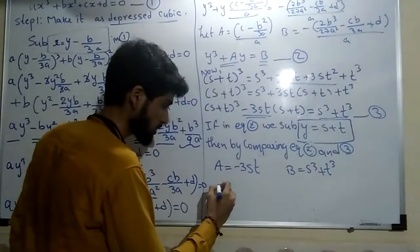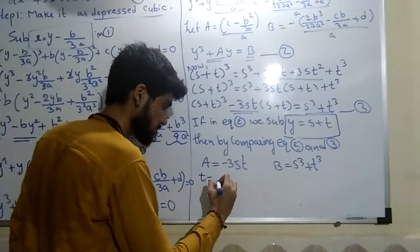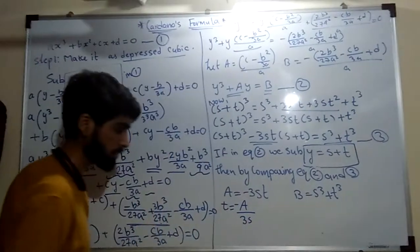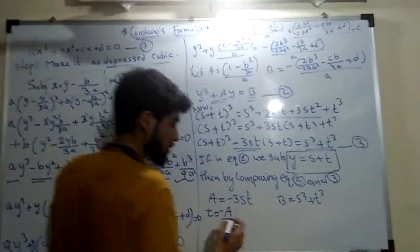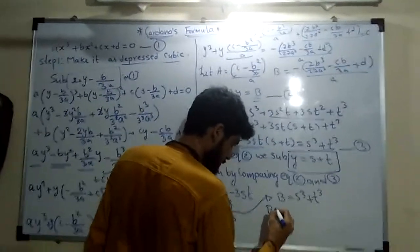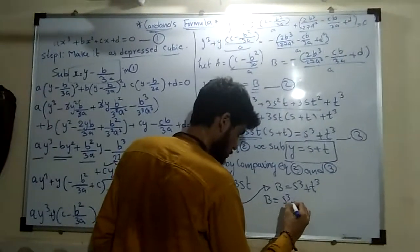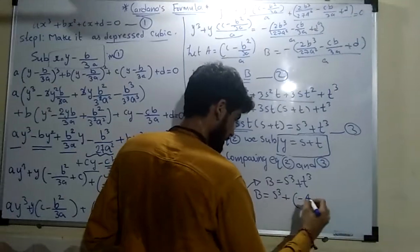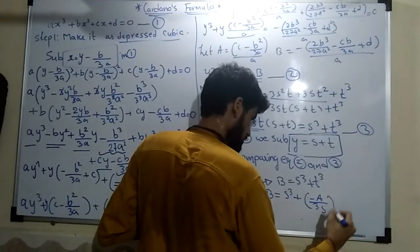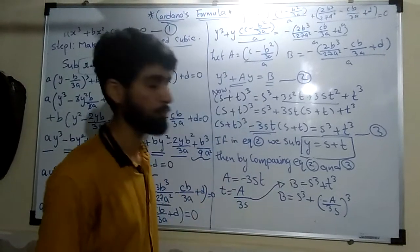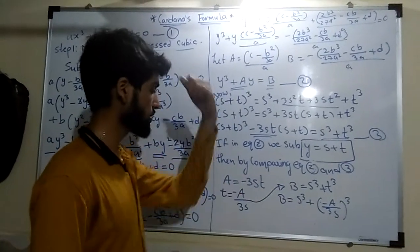From the relation a equals minus 3st, we can write t equals a divided by minus 3s. If I substitute this in the equation for b, I get b equals s³ plus, in place of t, minus a by 3s, cubed. We will now solve this equation to find the value of s and then find t.